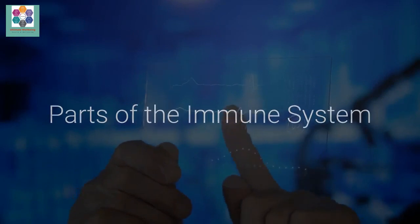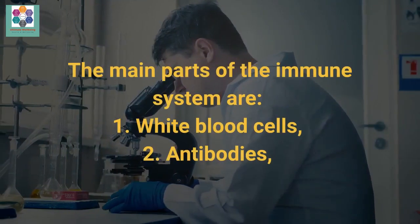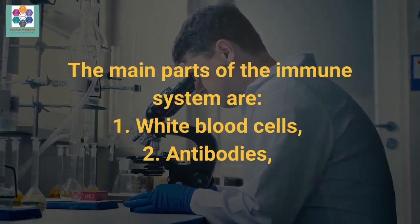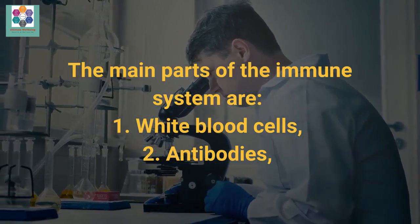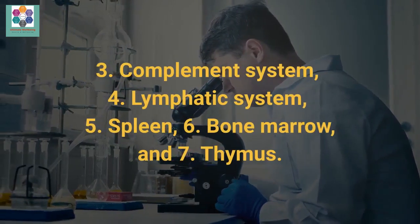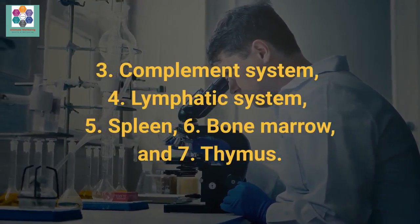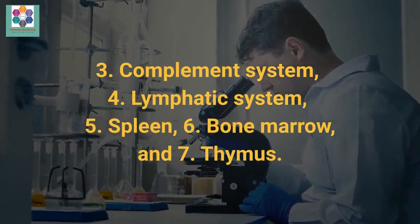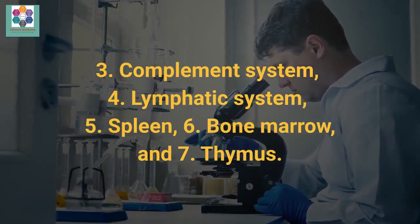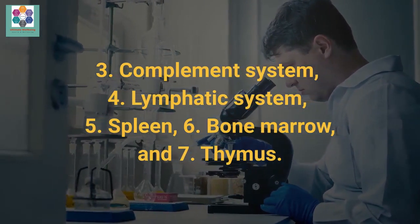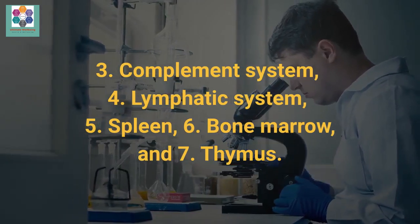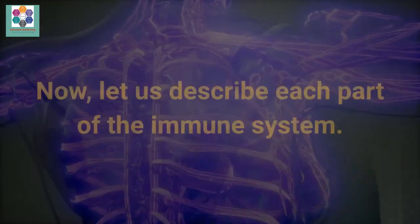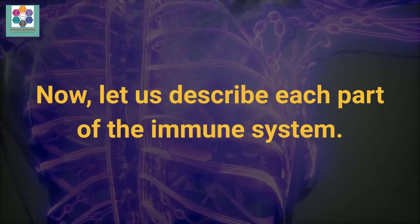The main parts of the immune system are: 1. White blood cells. 2. Antibodies. 3. Complement system. 4. Lymphatic system. 5. Spleen. 6. Bone marrow. And 7. Thymus.